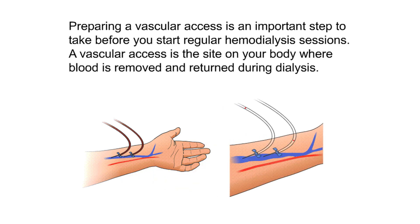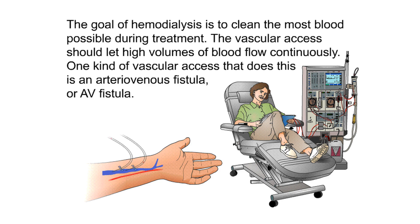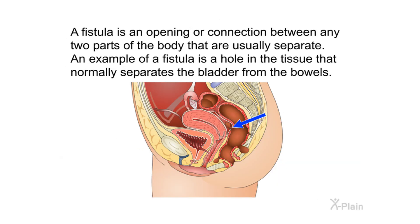Preparing a vascular access is an important step before starting regular hemodialysis sessions. A vascular access is the site on your body where blood is removed and returned during dialysis. It should be prepared weeks or months before you start dialysis — early preparation makes it easier to remove and replace your blood and causes fewer complications. The goal of hemodialysis is to clean the most blood possible, so the vascular access must allow high volumes of blood to flow continuously. One kind of vascular access that does this is an arteriovenous fistula, or AV fistula.